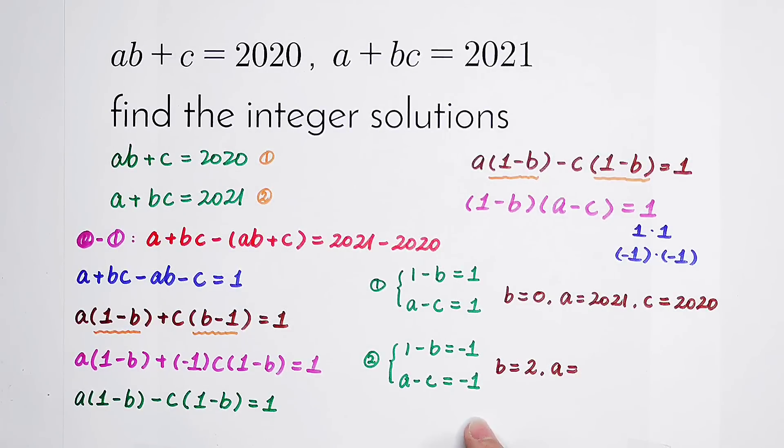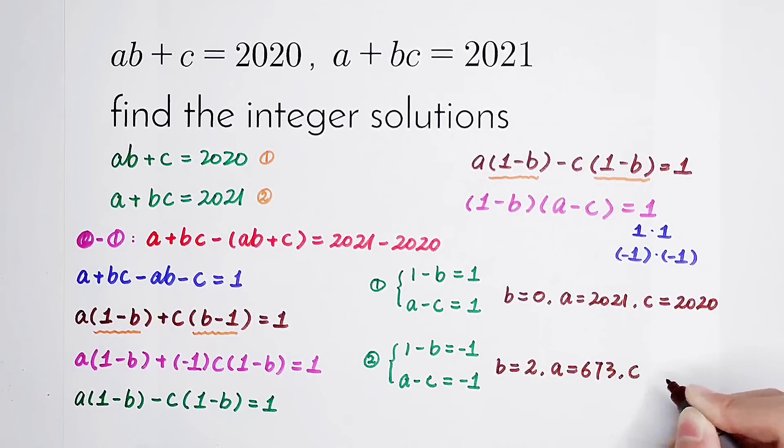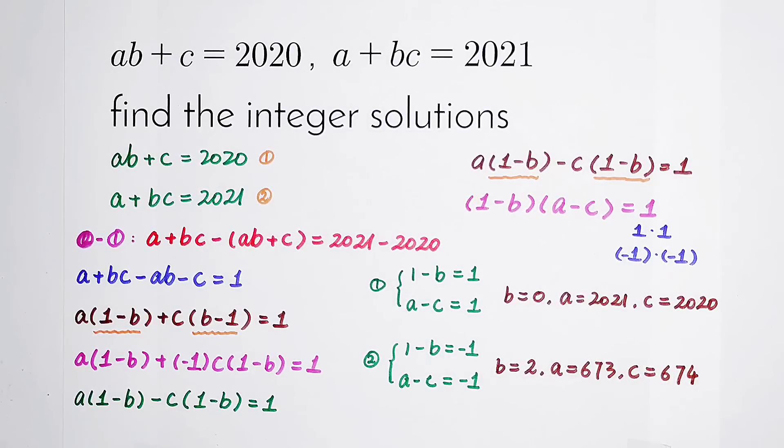The value of A is 673. Then the value of C is 674. So there are two kinds of solutions in all this question. Did you get it?